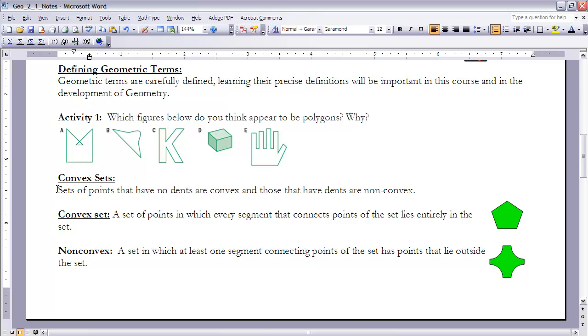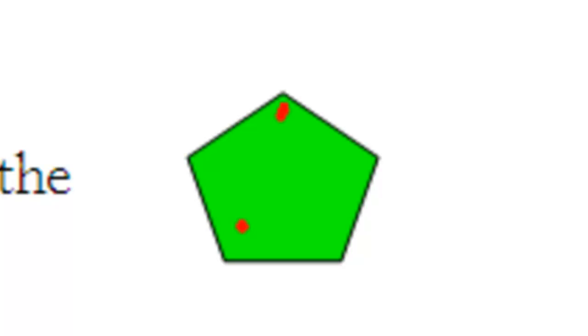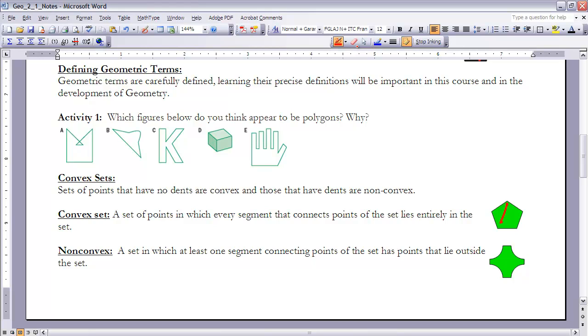When we talk about convex, basically what we're saying is we're saying that a figure has no dents. So if it's convex, it doesn't have any dents. A more specific definition of a convex set is a set of points in which every segment that connects points of the set lies entirely in the set. So we can see that if we take any point that's in the figure, another point that's in the figure. If I draw a line segment between those two points, all the points on the line segment are also within that figure. If that happens for all points within the figure, we say that the figure is convex.